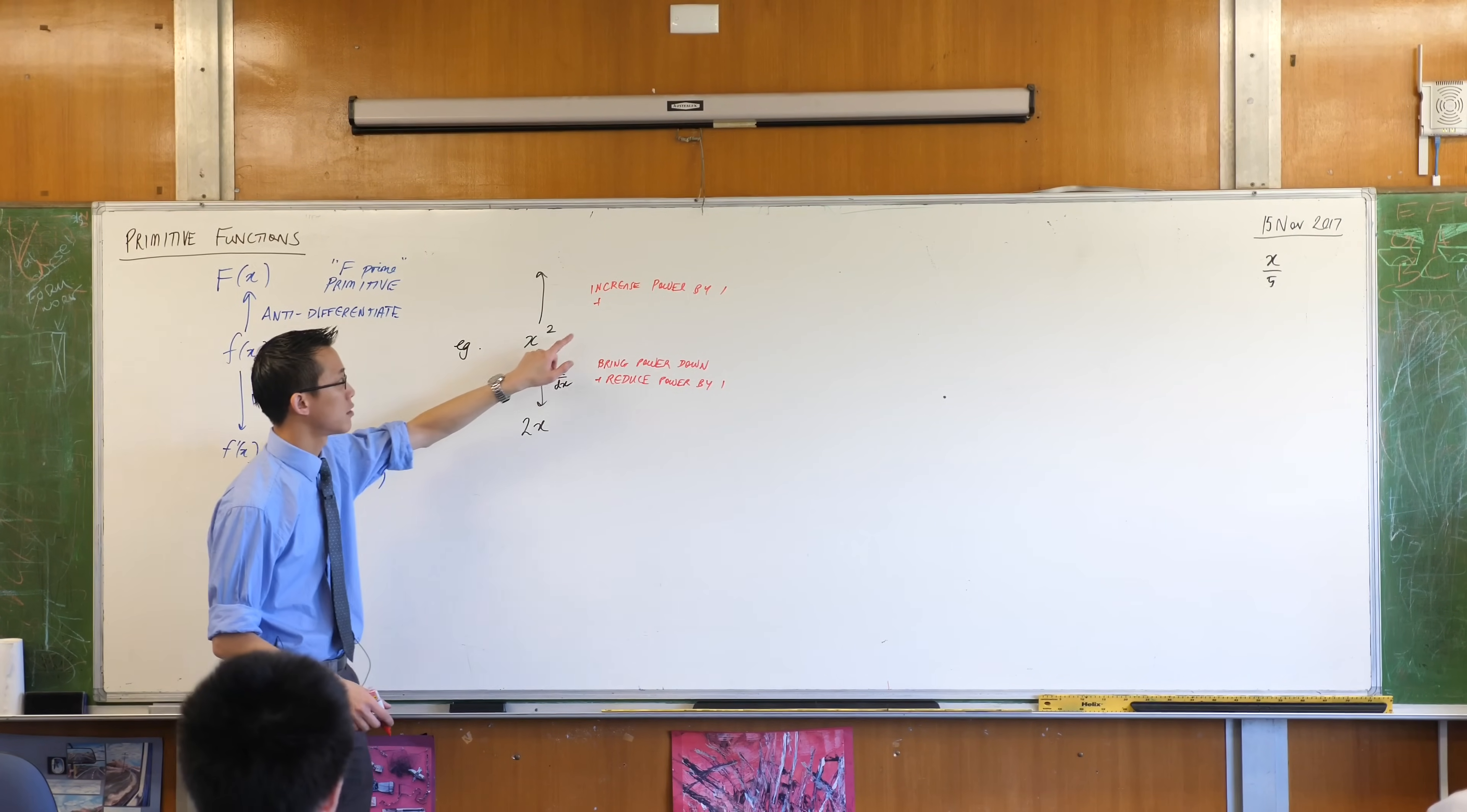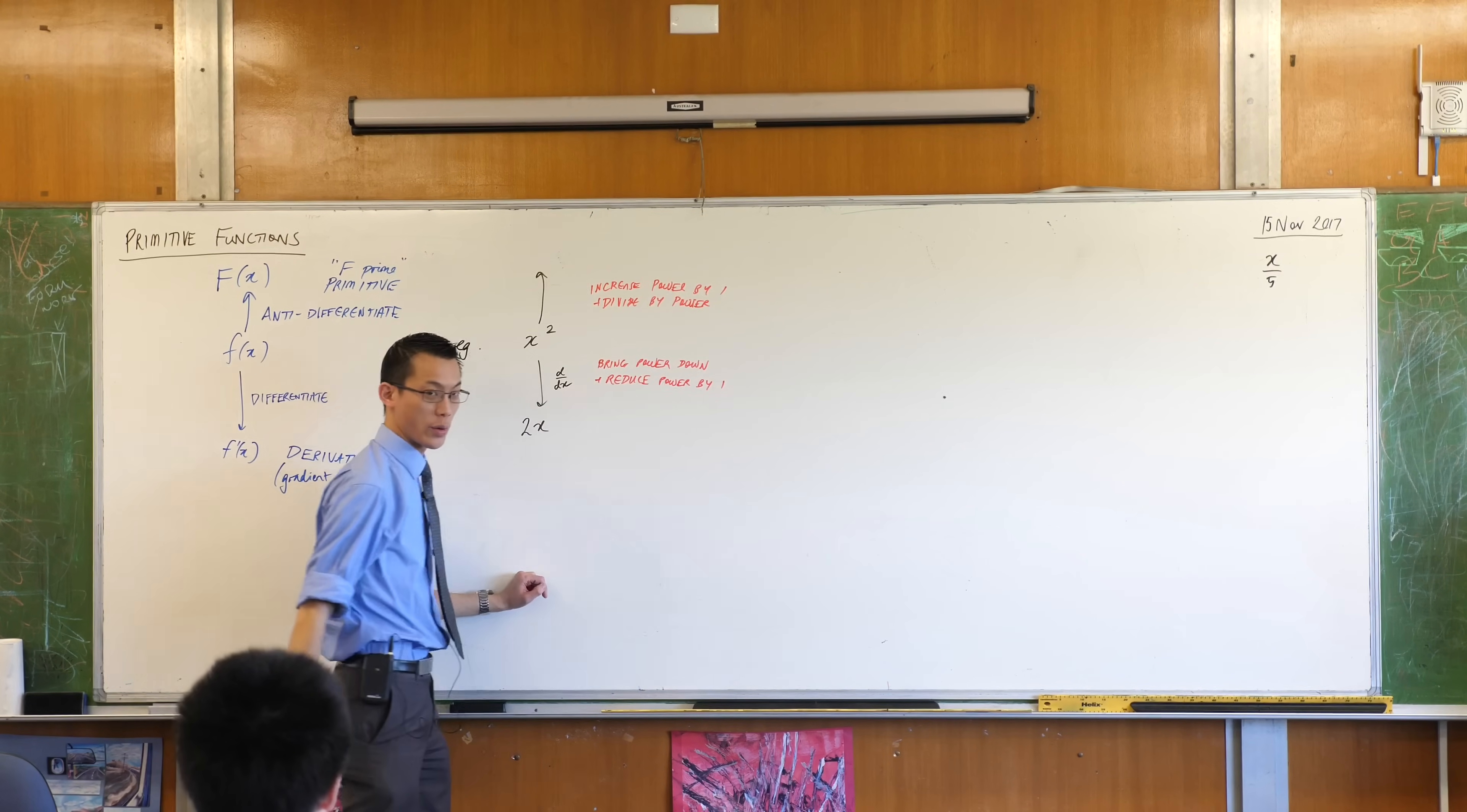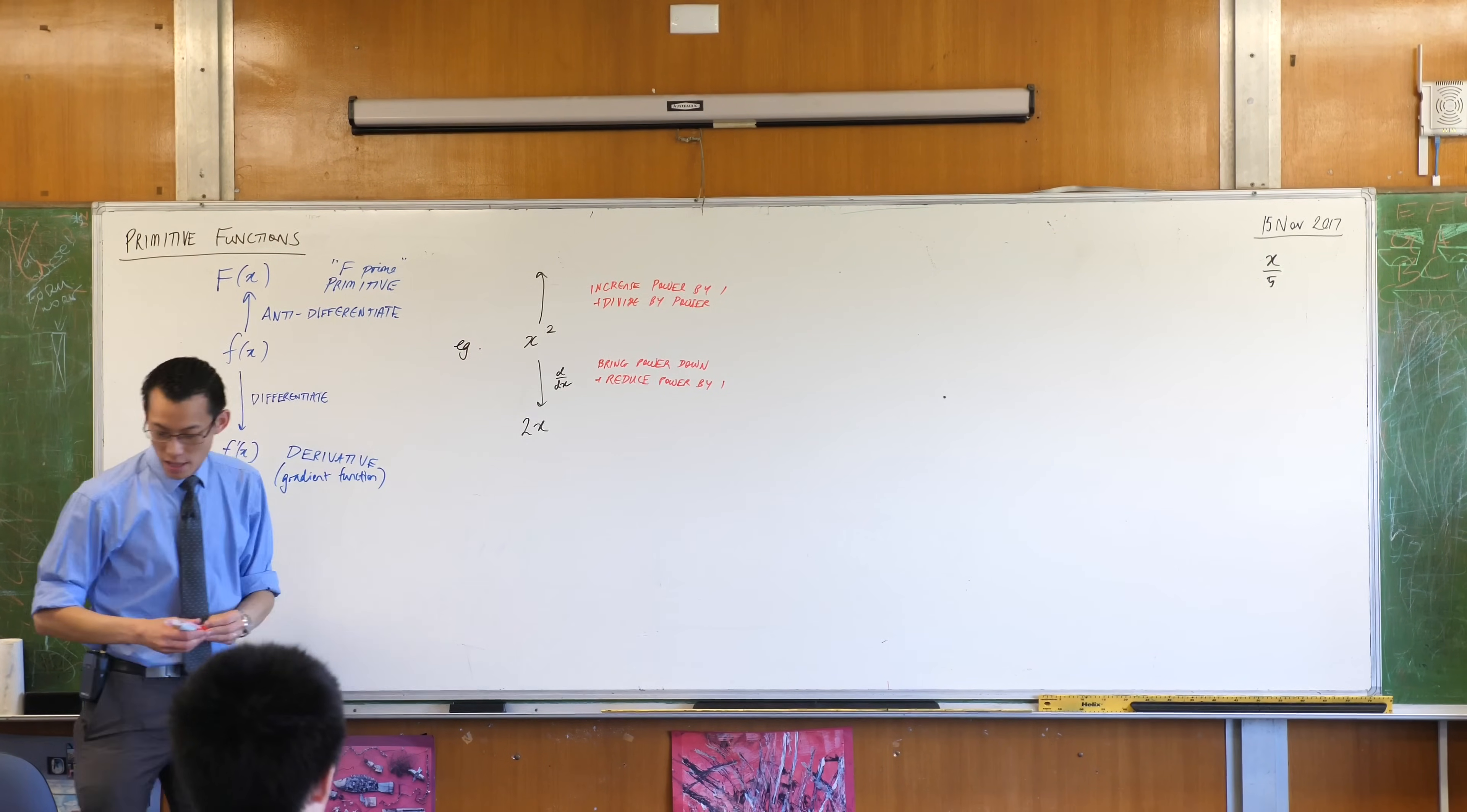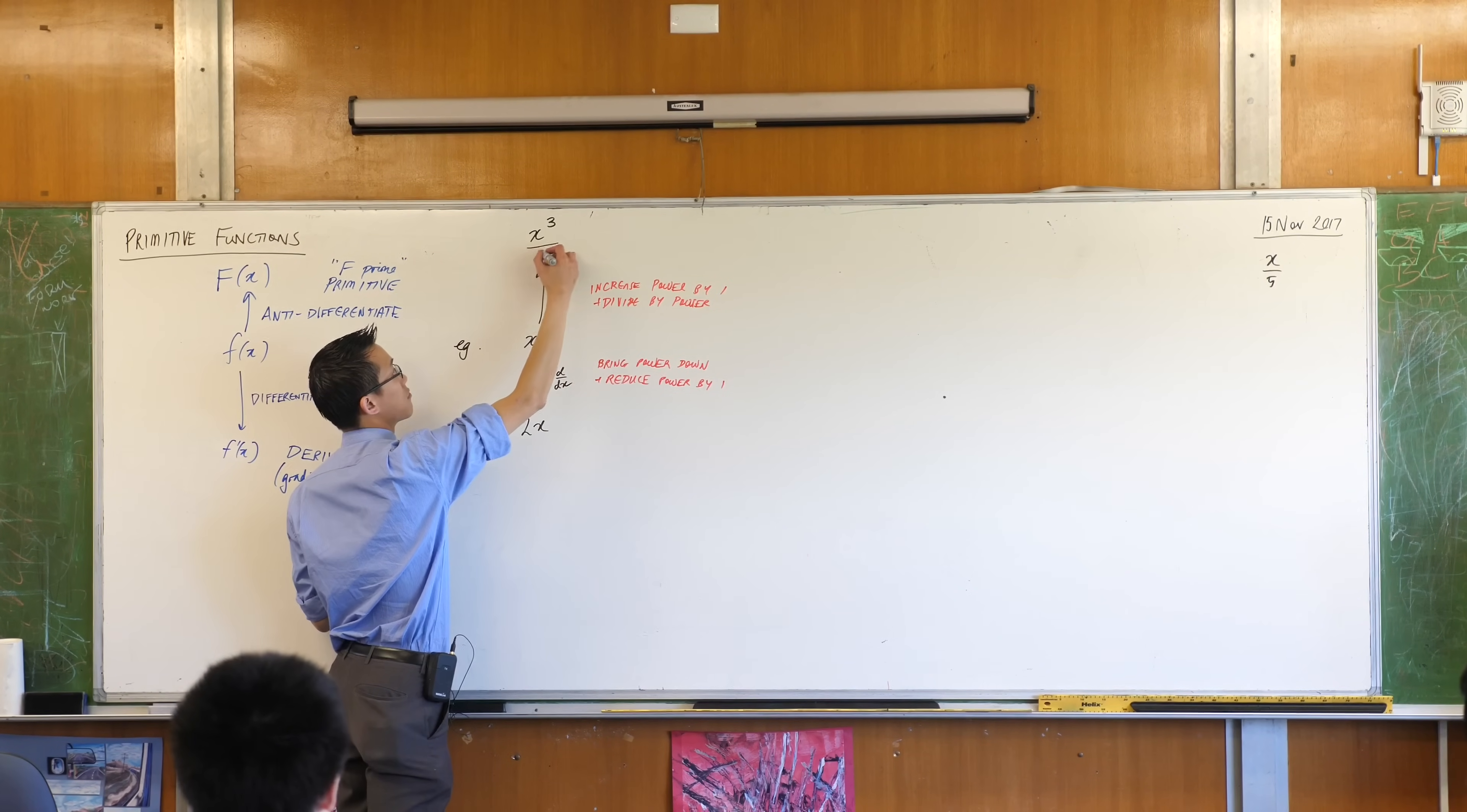And then now, I'm coming to this. Instead of bringing the power down, which is, in a sense, multiplying by that power, what am I going to do here? What's the opposite of multiplying? Dividing, right? In fact, a better way to say bring power down is multiply by the power. Here, we're dividing by the power. Does that make sense? Let's do it. The power is currently two. When I increase it, you're going to get three. That's the first step. Now, I'm going to divide by this new power, which gives me a third.